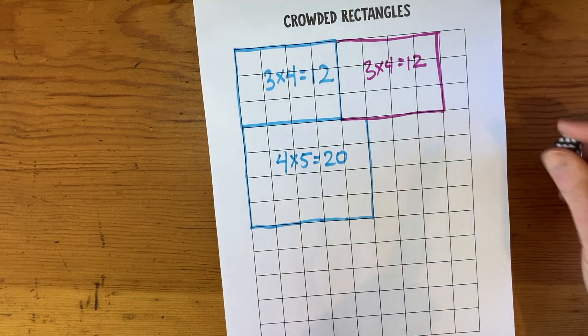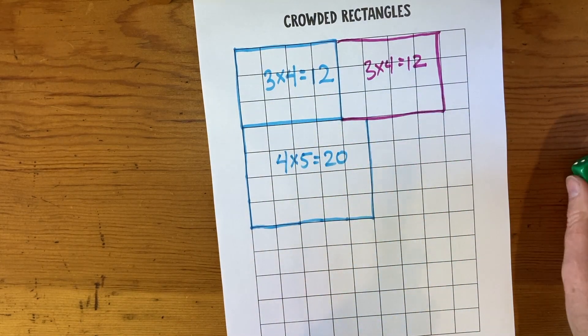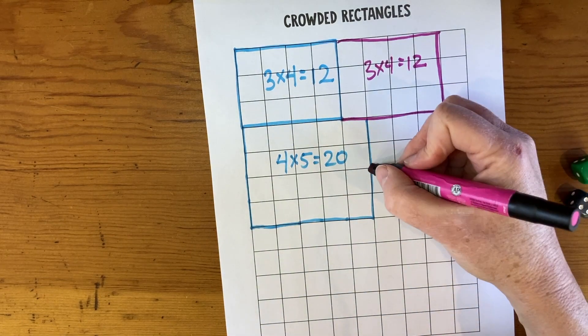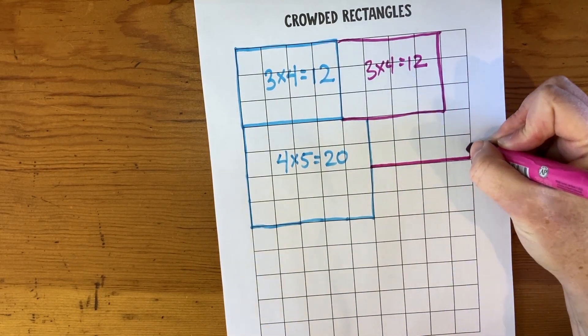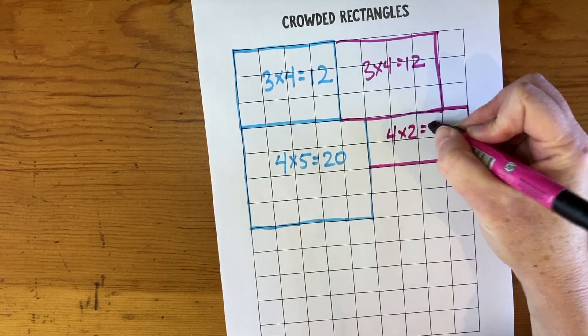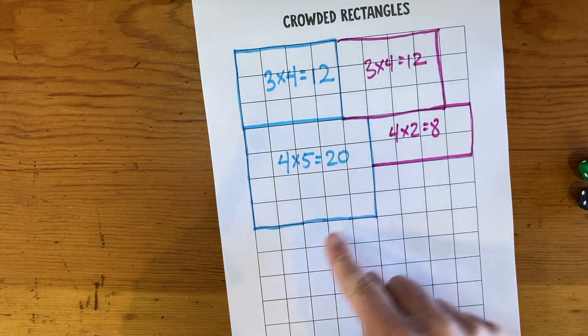And this board is filling up fast. Here's a four times two from pink. You can fit that right in here, four times two equals eight.